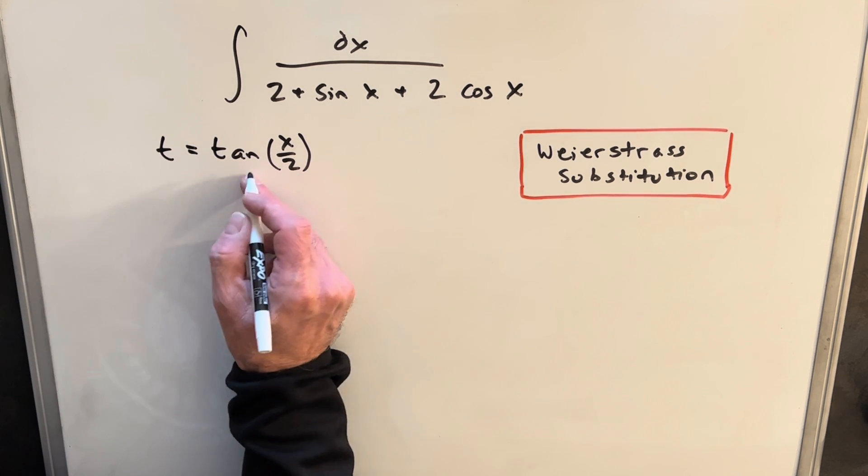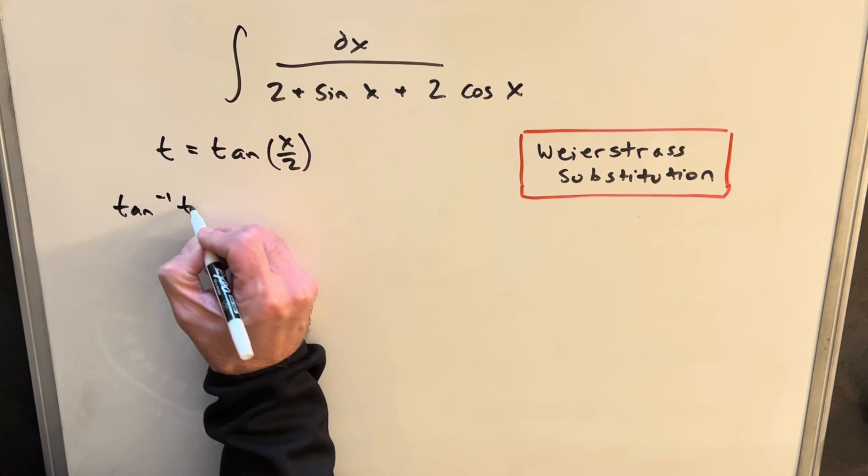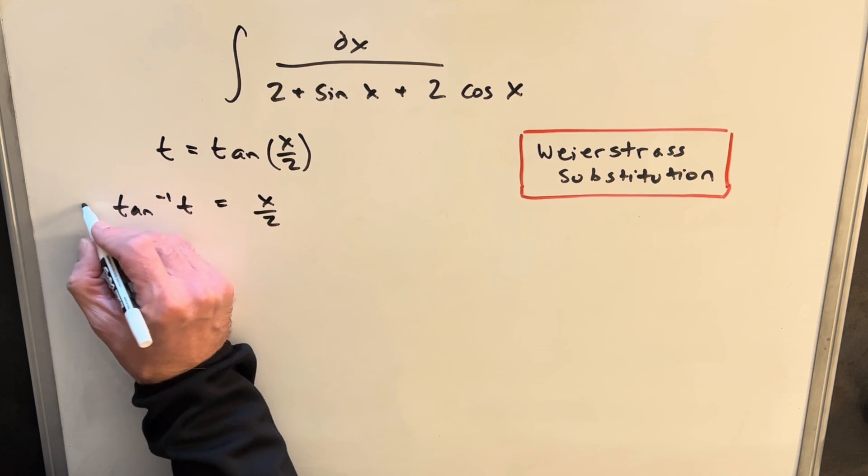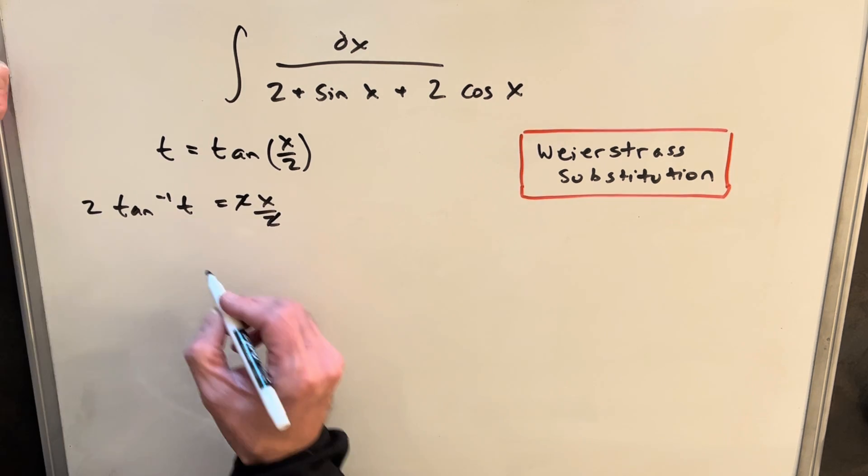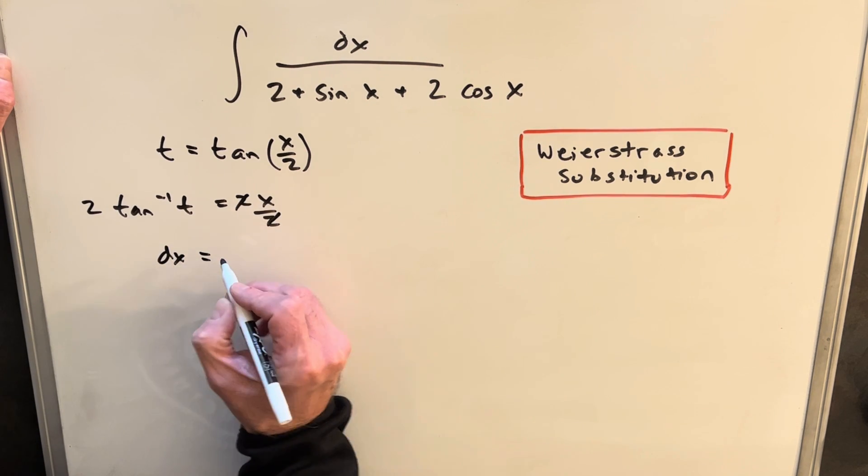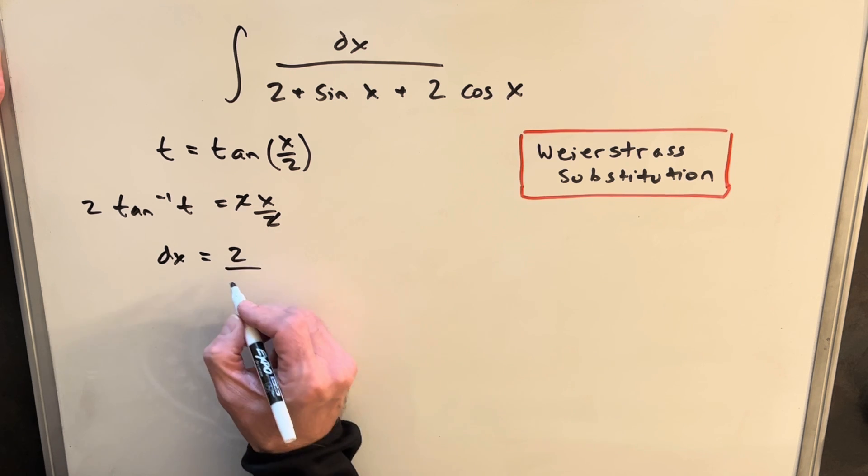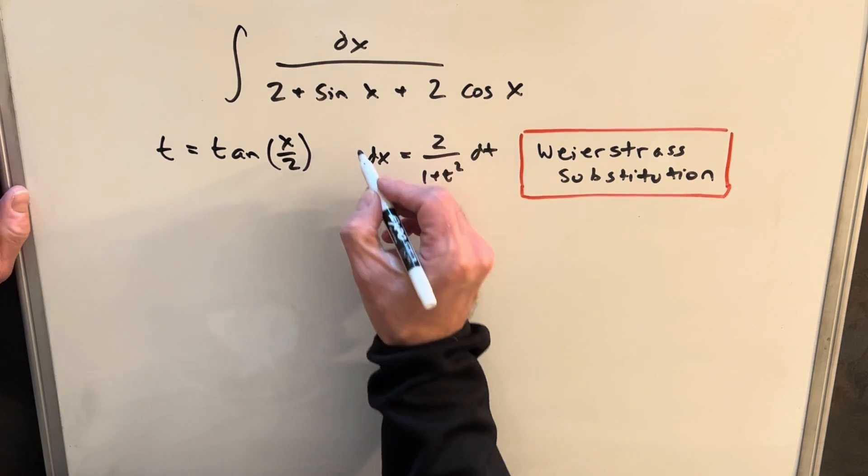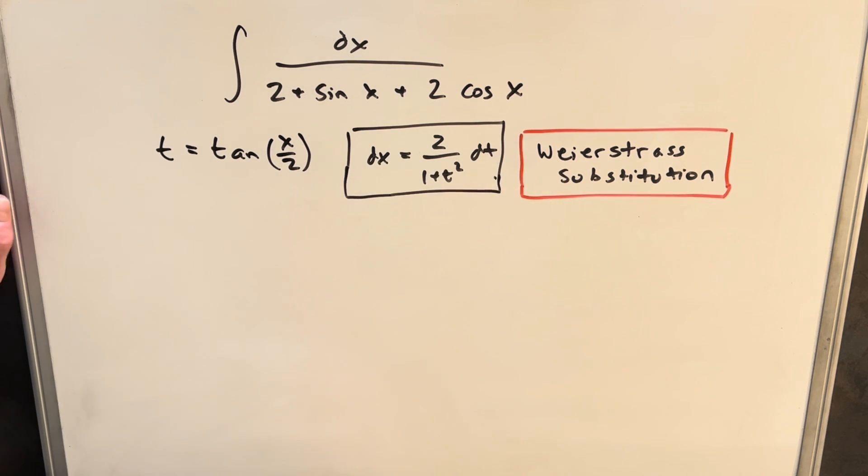Well, to start with, we can just use the arctan to write this a little different. So we can write this as x over 2 equals tan inverse t. Then we can multiply a 2 on both sides, so we've isolated our x. Then we can say dx is going to be 2 times the derivative of inverse tangent, which is 1 over 1 plus t squared. So now we've found one useful value that we can use in our substitution.